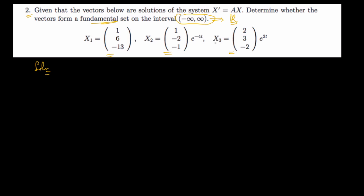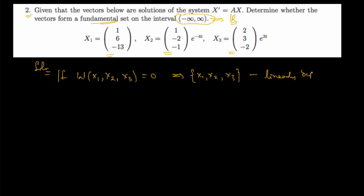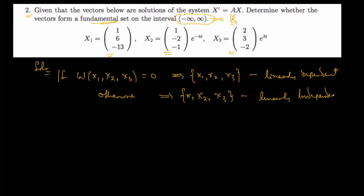By taking the Wronskian of the three vectors: if the Wronskian of x1, x2, and x3 equals zero, then x1, x2, and x3 are linearly dependent. Otherwise, if it is not equal to zero for all t in the set of real numbers, then x1, x2, and x3 are linearly independent. So let's start by checking that.